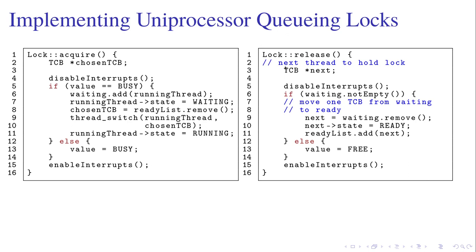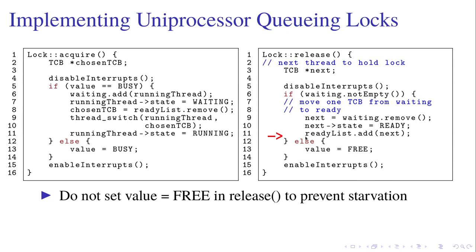When we release the lock, we disable the interrupts and check whether there is something in the waiting list. If so, we set it to ready; if not, we set the value to free, and then enable the interrupts. One thing to notice is that we don't set the value to free in the release function even though the lock is actually free. This is to prevent starvation, because when we execute on this line another new thread may jump in and take the execution opportunity.